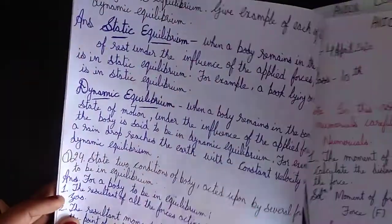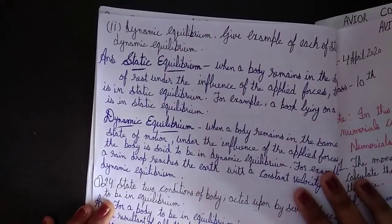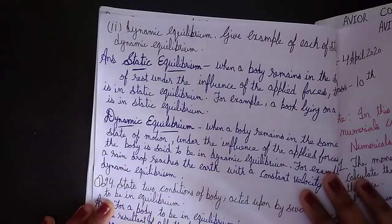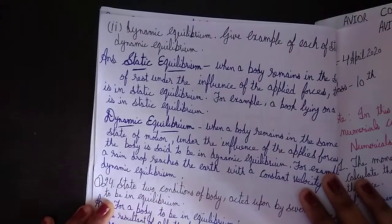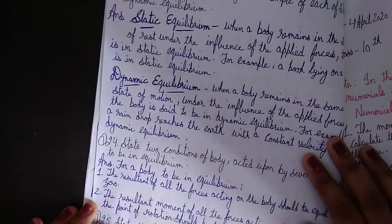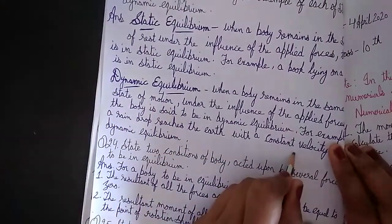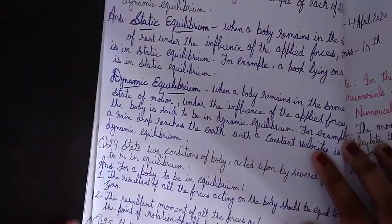State the conditions when the body is in static and dynamic equilibrium. Static equilibrium is when the body remains in the state of rest under the influence of applied forces — for example, a book lying on a table. Dynamic equilibrium is when the body remains in the state of motion under the influence of applied forces — for example, a raindrop reaching the earth with constant velocity.